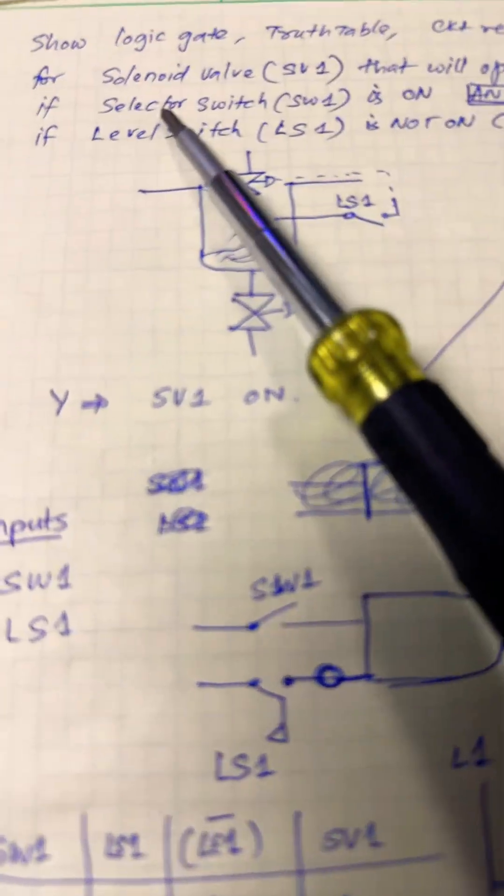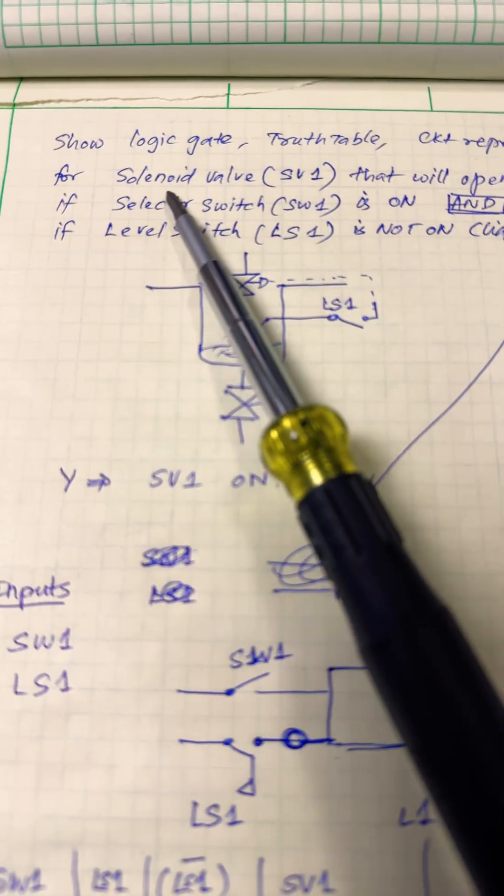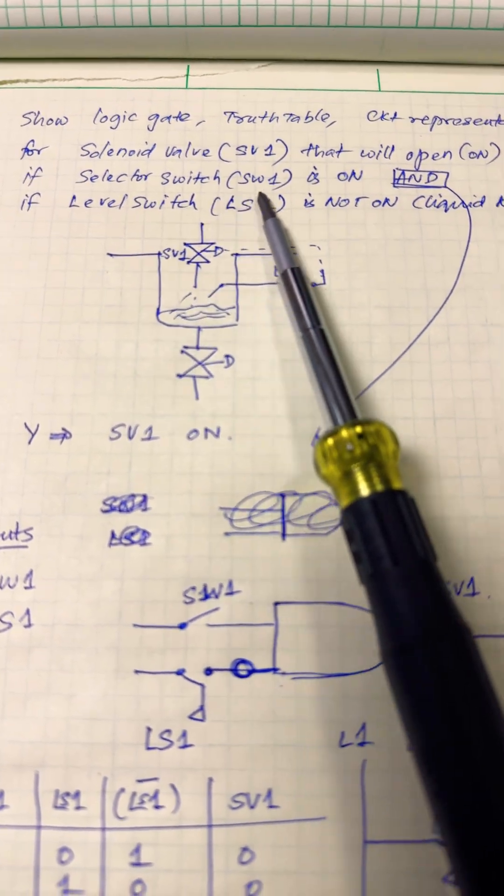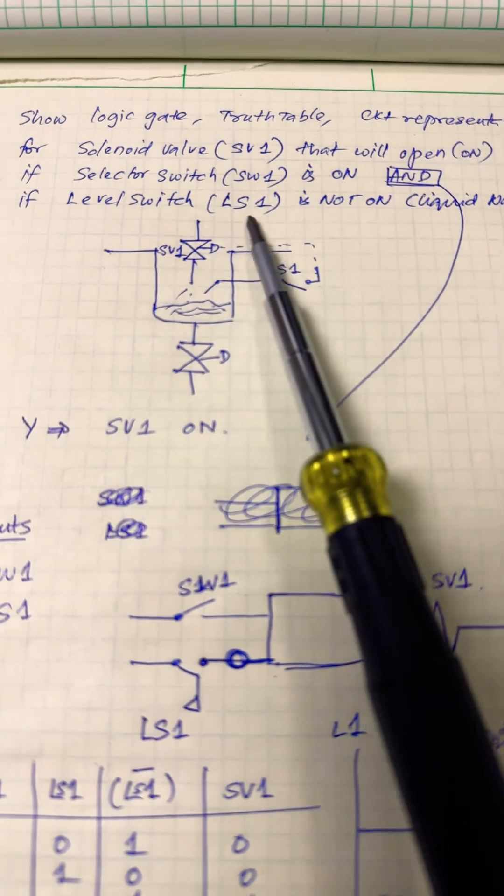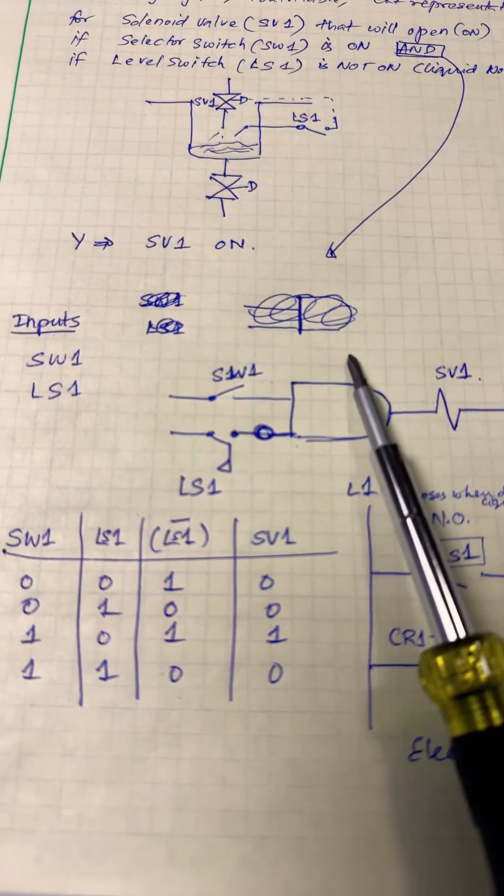So let's write a logic gate truth table and circuit representation for a solenoid valve that will open if a selector switch on the machine is on and the level switch is not on. We know it's an AND condition, so we'll drop in an AND gate.